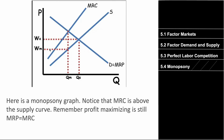Here's a monopsony graph. Demand equals MRP, but supply is not a constant horizontal line as in perfect competition — rather it's an upward sloping linear line. Make sure you remember that MRC is above the supply curve, similar to how in a monopoly, marginal revenue is below demand. So: MRC is above supply for monopsony, and for monopoly, marginal revenue is below demand. Profit maximizing is still MRP equals MRC. Make sure you remember both graphs.